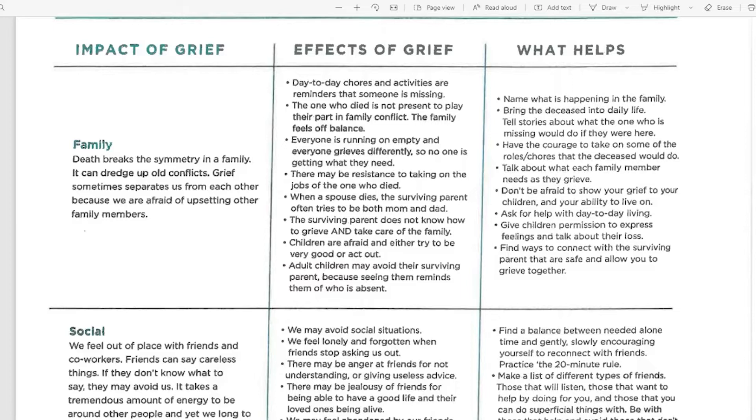Some things that can help is that we name what is happening in the family, that we can be brave enough to name that elephant in the room. We can bring the deceased into daily life, tell stories about them, about what the one who was missing would have done if they were there. Have the courage to take on some of the chores and the roles that the deceased would do. Talk about what each family member needs as they grieve. Some may not know what they need, and that's okay, but start that discussion of how are you? How are you dealing with this loss? This is how it's affecting me. I don't know if you're feeling some of those feelings.